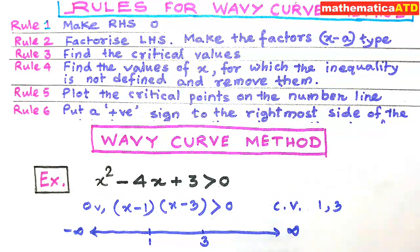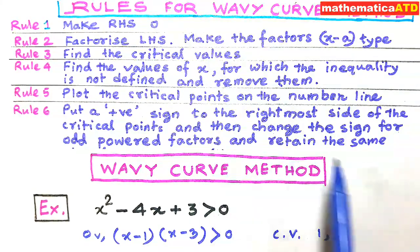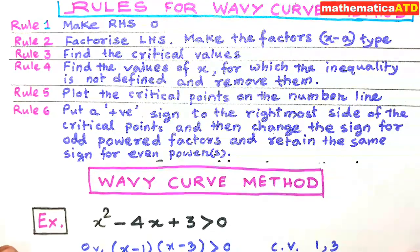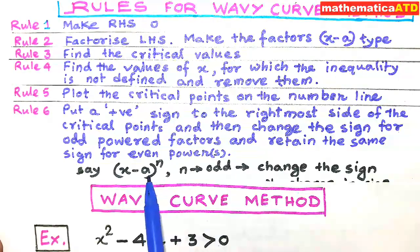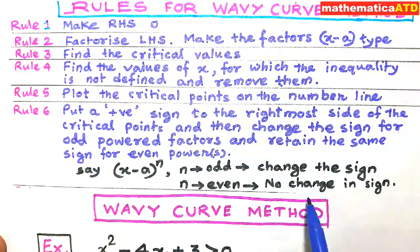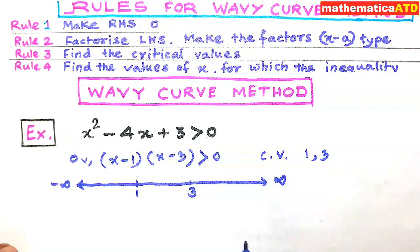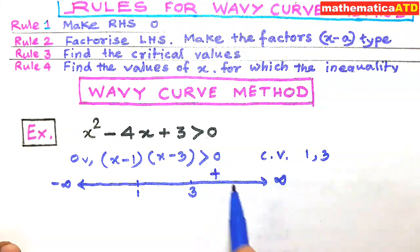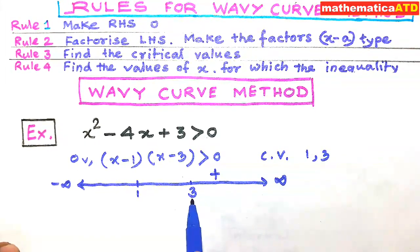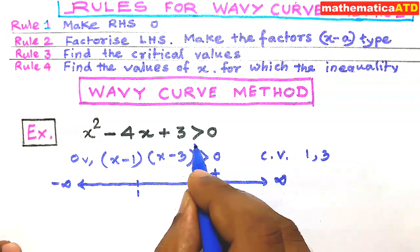The next rule: put a positive sign to the rightmost side of the critical points, then change the sign for odd-powered factors and retain the same sign for even-powered factors. If the factor is (x - a)^n, then if n is odd, change the sign; if n is even, there is no change. In our example, on the extreme right — from 3 to positive infinity — we put a positive sign. The critical point 3 gives the factor (x - 3) with power 1, which is odd, so we change the sign from positive to negative.